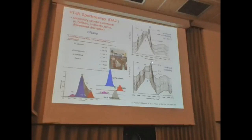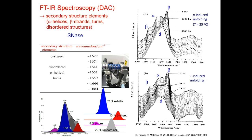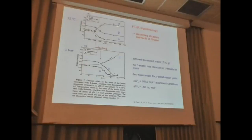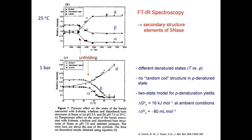As a function of temperature, the amide I band region shows that ordered structures decrease and disordered structures increase. At ambient temperature, as a function of pressure, essentially the same thing occurs — you can unfold the protein and observe the loss of alpha helices and beta sheets. Measuring secondary structure content as a function of both temperature and pressure, you can determine the Gibbs free energy change of unfolding — here 16 kJ/mol — and the volume change of unfolding, which must be negative for pressure-induced unfolding: minus 80 mL/mol in this case.